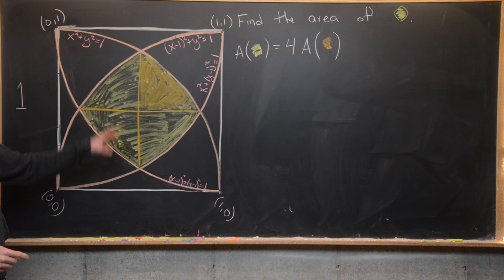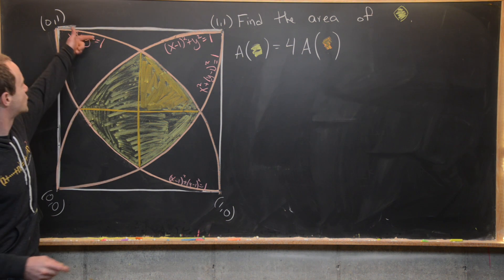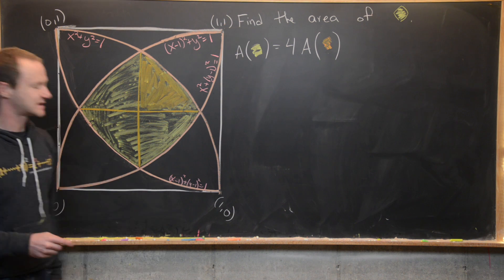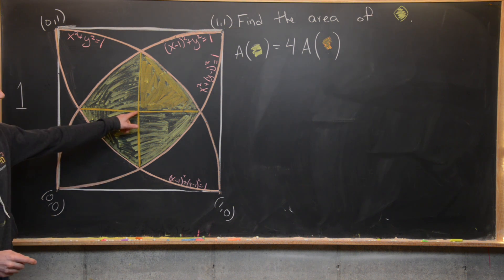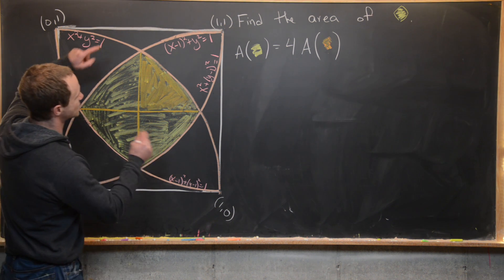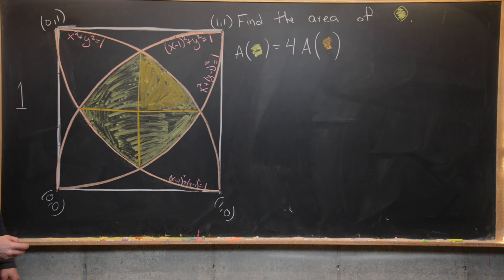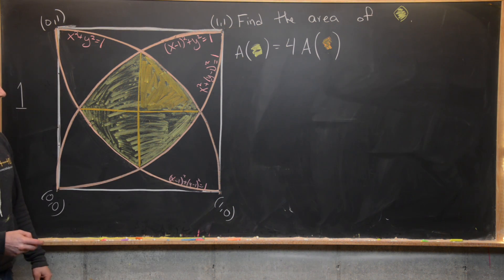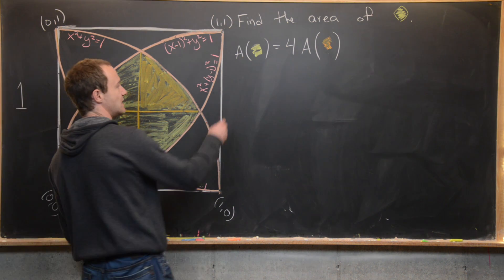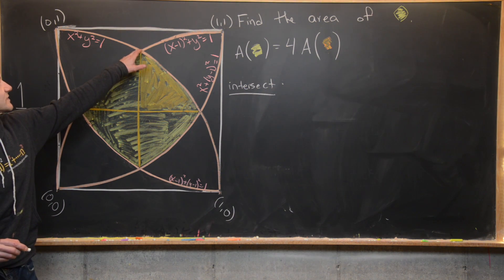The orange piece has a nice form — it's the area between the curve defined by the top circle and a horizontal line. So we need to find the equation of that horizontal line and calculate the two intersection points.